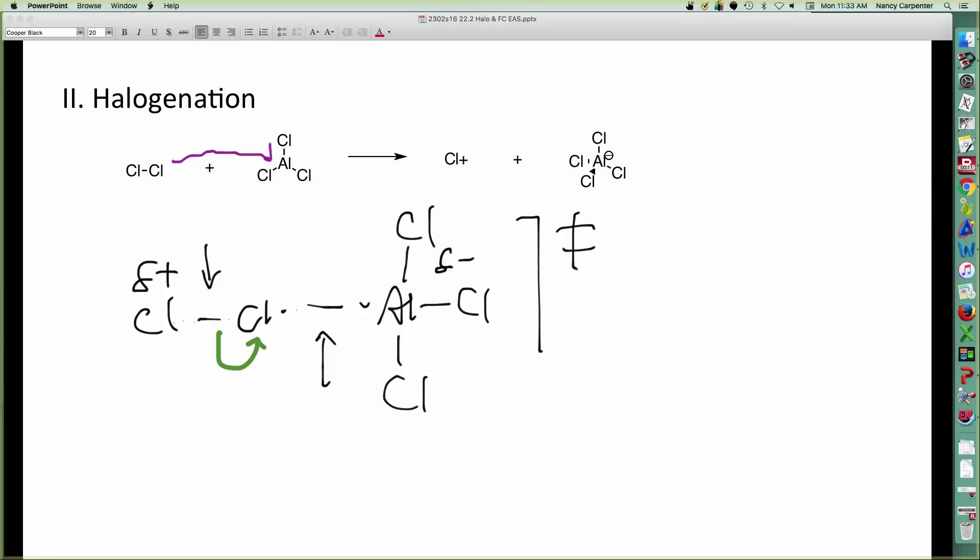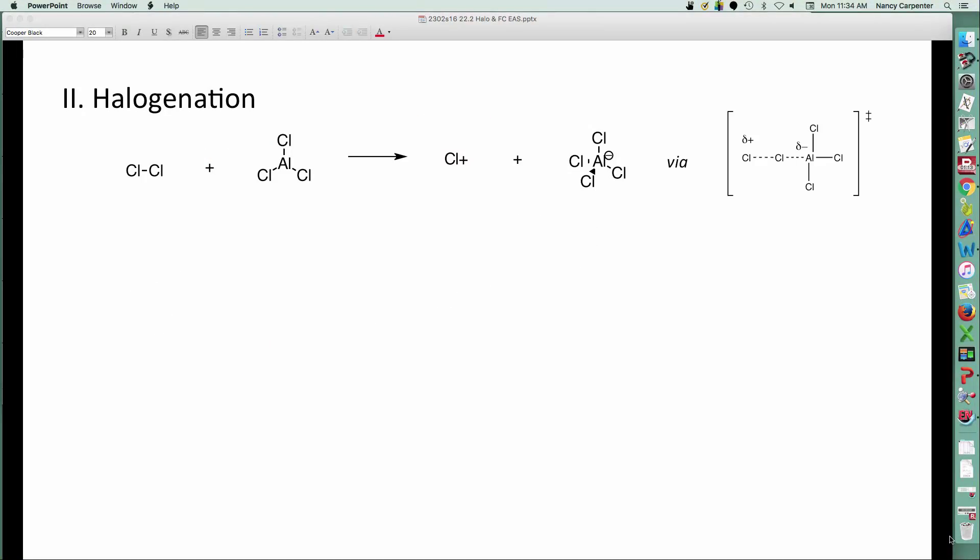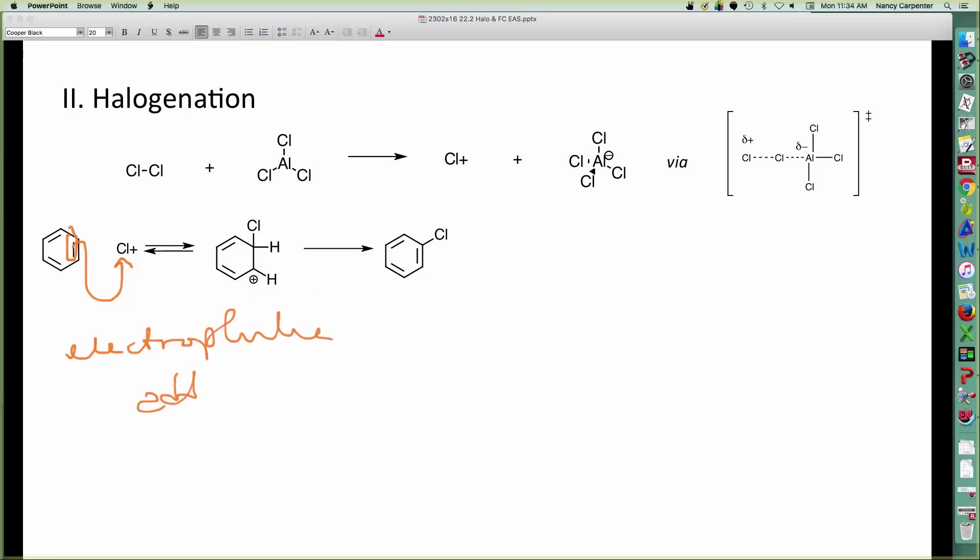And we're trying to break this bond and form this bond, and that's exactly what happens. So there's a buildup of delta positive here in this transition state and a buildup of delta minus here. And ultimately, we end up with our super powerful chlorine electrophile. It's not chlorine. I think it's chloronium. I don't know really what you call that thing. But anyhow, once you have that, that is a nice strong electrophile that can then react with our benzene nucleophile.